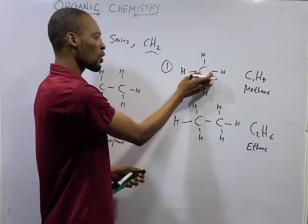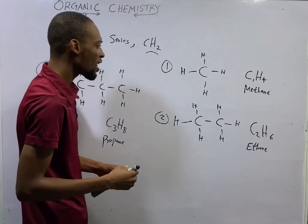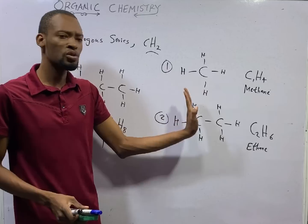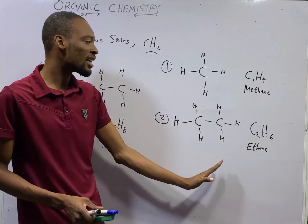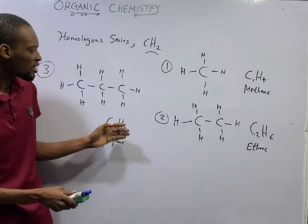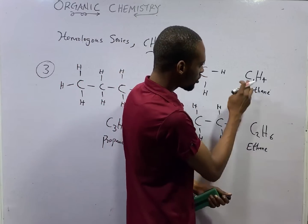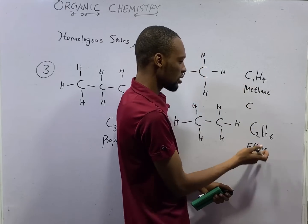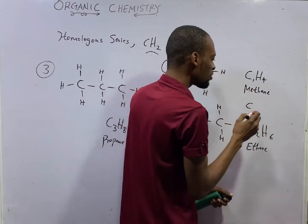If you look at these members, you see that they have carbon and hydrogen throughout with single bonds. The difference between member one and member two: this one has one carbon, that one has two carbon — two carbon minus one carbon gives one carbon. This one has six hydrogen, this one has four — six hydrogen minus four hydrogen is two hydrogen. So the difference is CH₂.